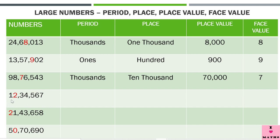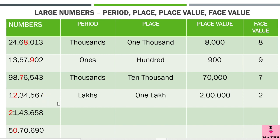Let us read the next number: 12 lakh 34,567. Here 2 has been highlighted. The first three digits are in the ones period, the next two digits are in the thousands period, and the next two digits are in the lakhs period. So 2 is in the lakhs period. Its place is 1 lakh — in the lakhs period there are two places: 1 lakh and 10 lakh, and 2 is at the 1 lakh place. Its place value is 2 lakh and its face value is 2.